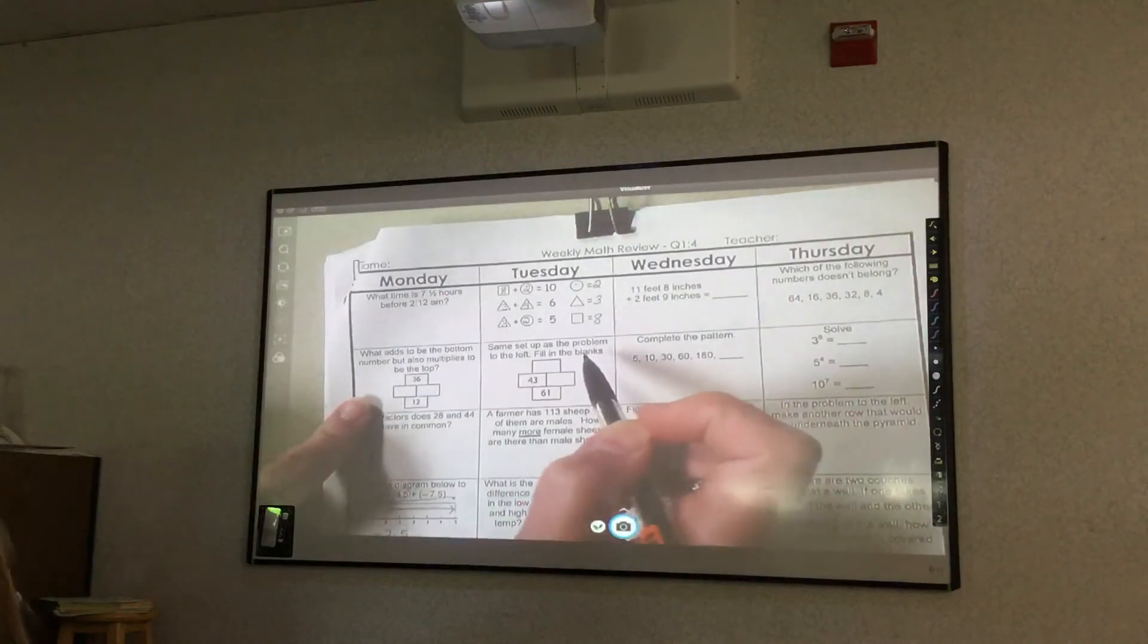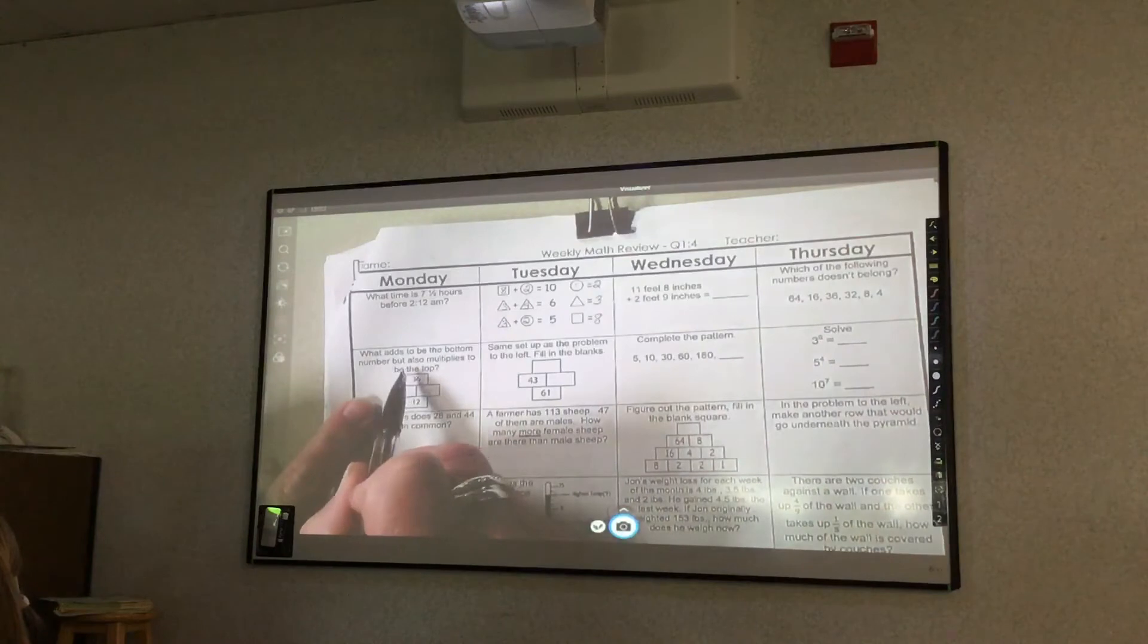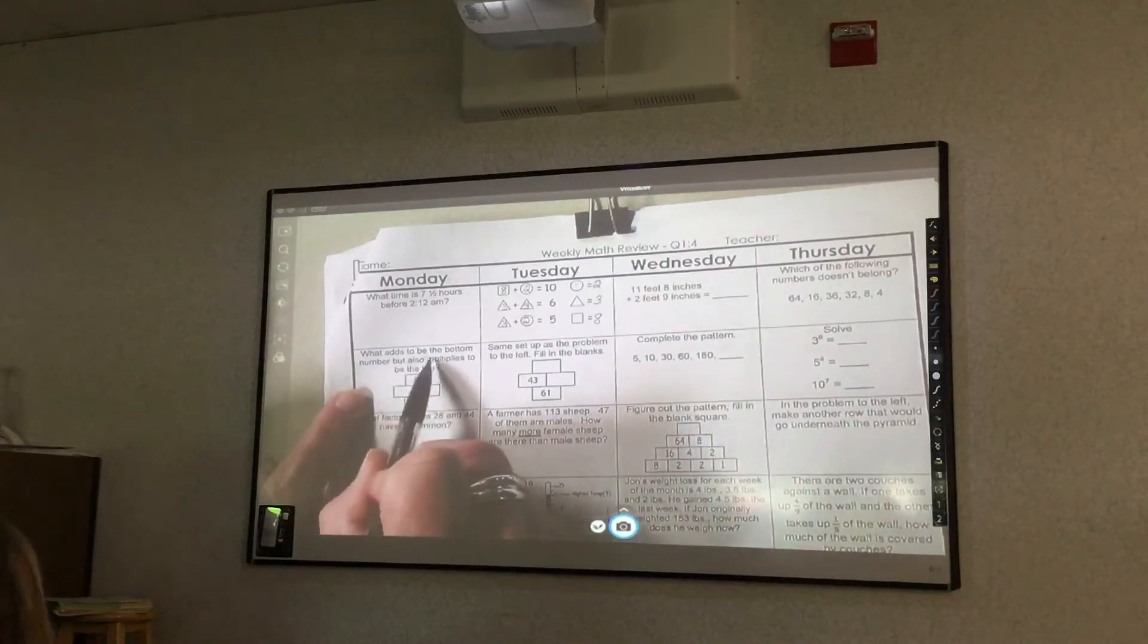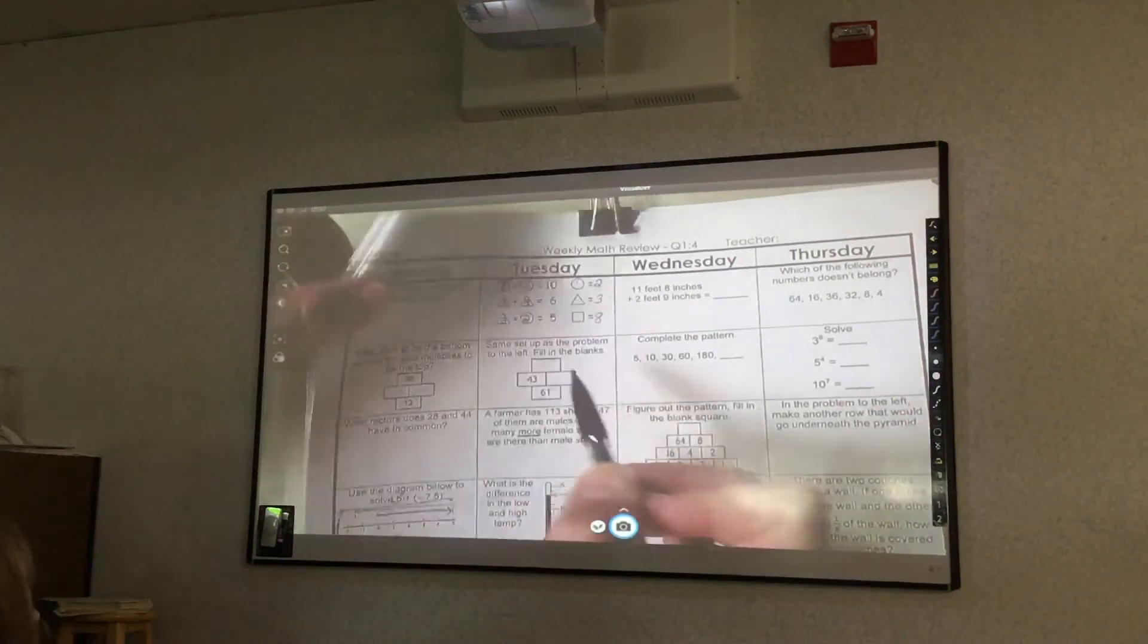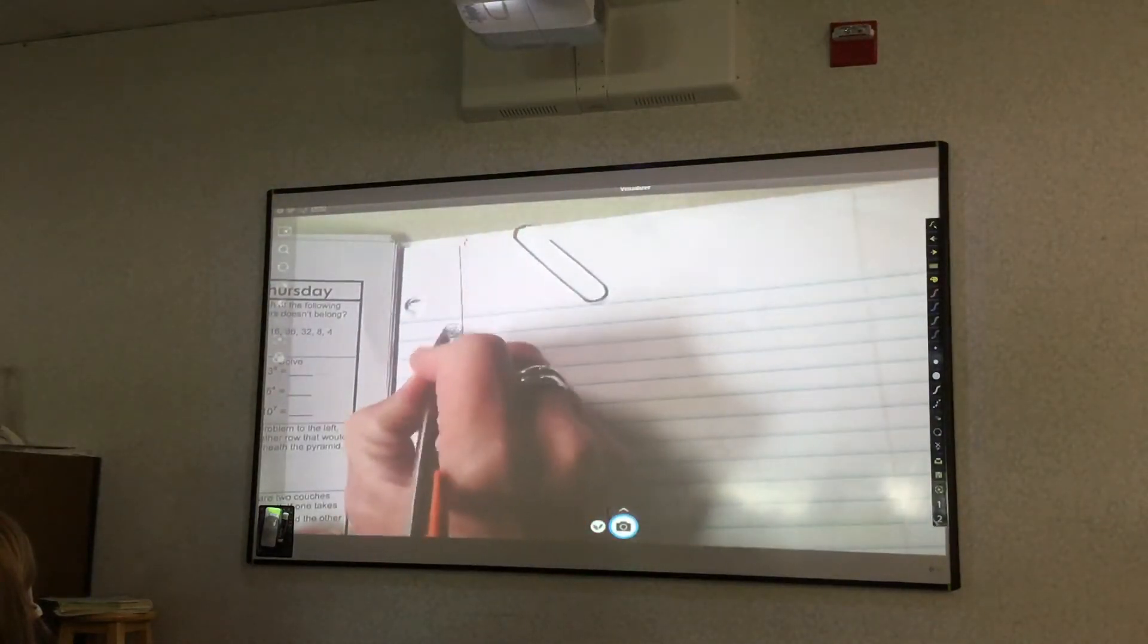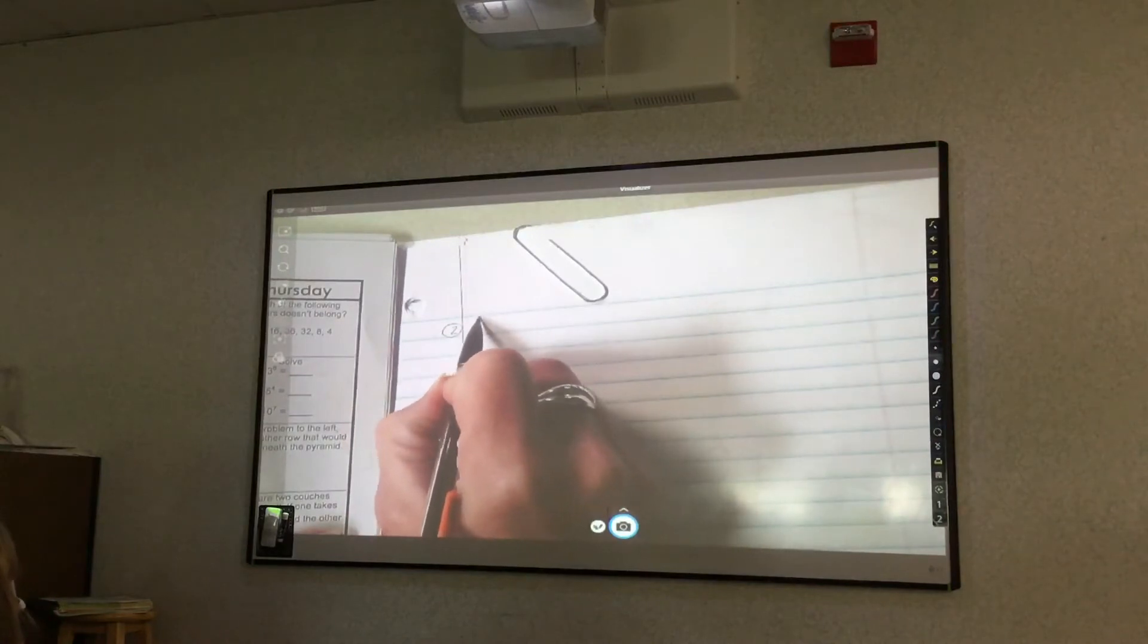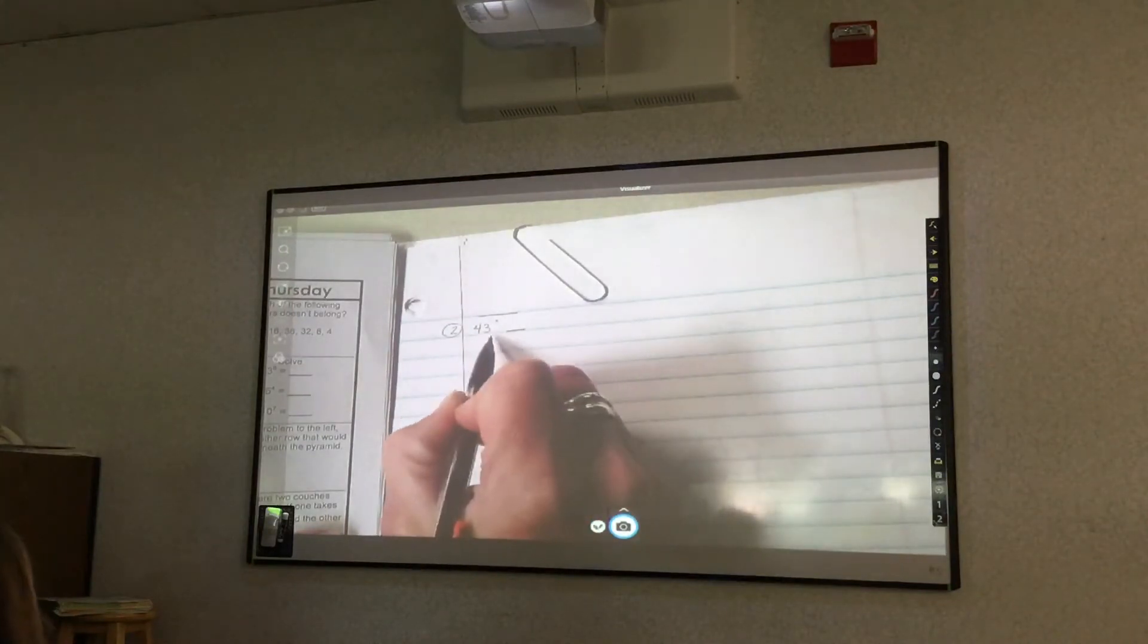Same set up as the problem to the left - fill in the blanks. So the set up to the problem was what adds to be the bottom number, but also multiplies to be the top. So these two multiply to get to the top, but these two add to get to the bottom. So I'm working here with these numbers. So I've got a number up here is 43 times something, and 43 plus something equals 61.